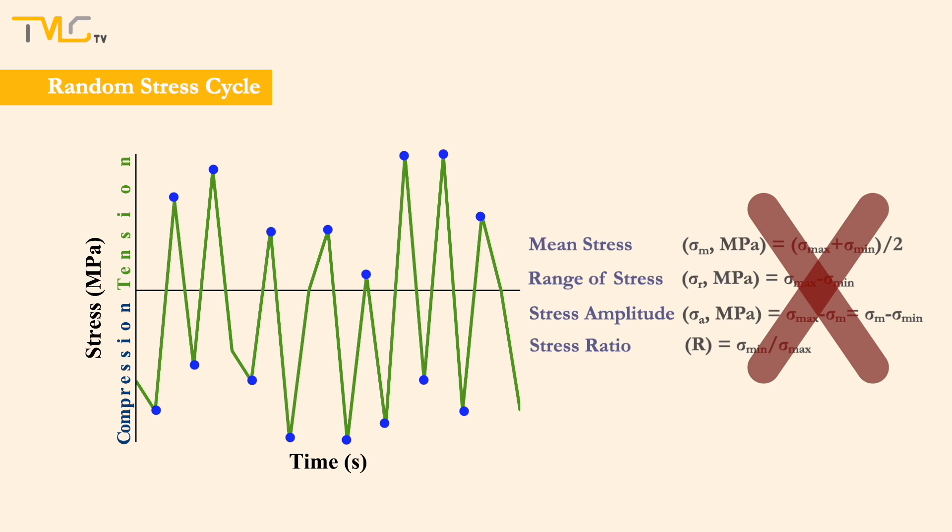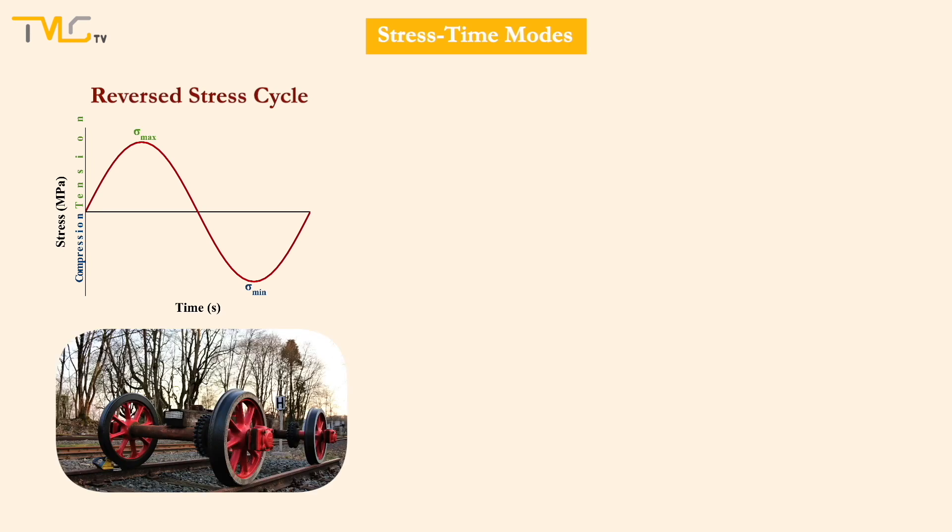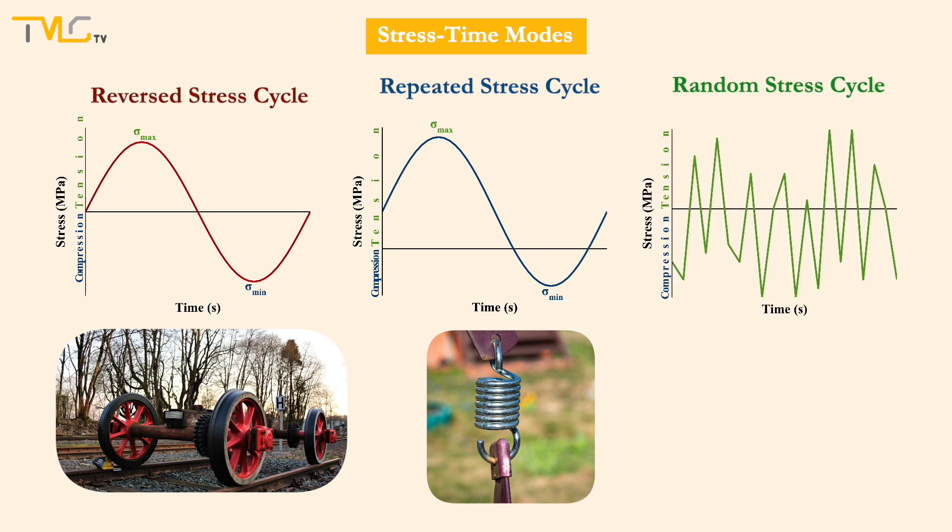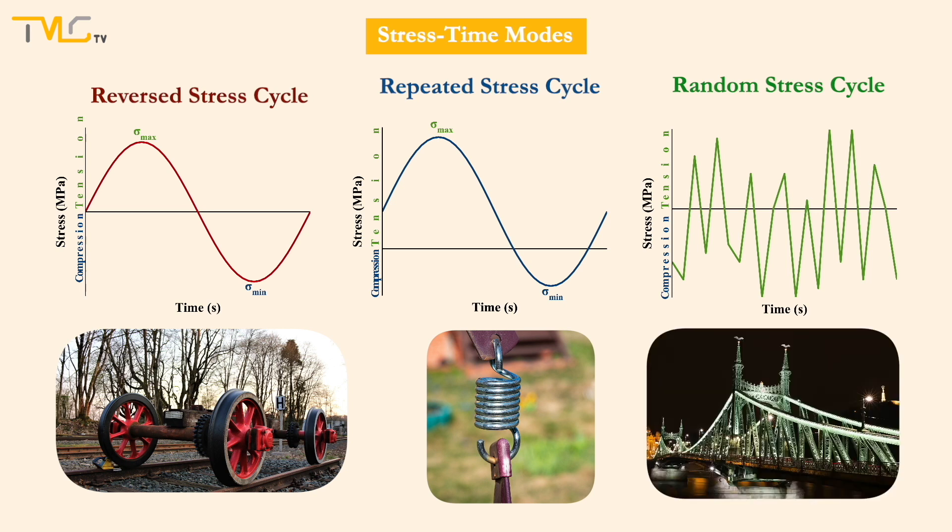Before finishing this video, one example for each stress time mode will be given. The rotating shaft of a train to which bending loads are applied in a cyclic fashion experiences a reversed cycle fatigue during operation. A loaded spring is already experiencing tension and the magnitude of tensile stress may decrease or may pass to the compressive region during cycling loading for a repeated stress cycle operation. Suspension wires of bridges experience a wide variety of stress conditions, which makes them a good example for a random stress cycling mode of fatigue.